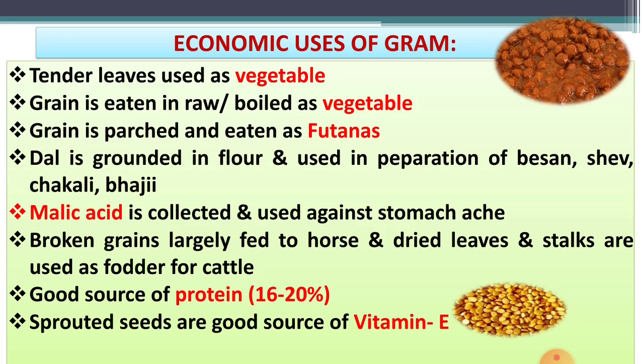Now, the economic uses or economic importance of chickpea or Bengal gram. The first economic use is that tender leaves of young gram crops are used as a vegetable between 30 to 60 days after sowing. In this period, the tender leaves of the gram are used as a vegetable.